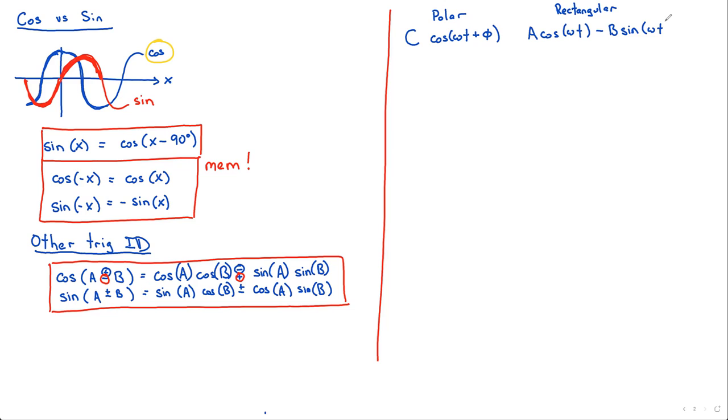Given the fact that this is the standard way that electrical engineers like to write it, how do we go back and forth between these two formulations?